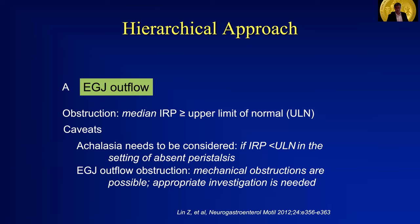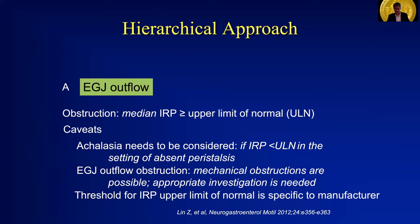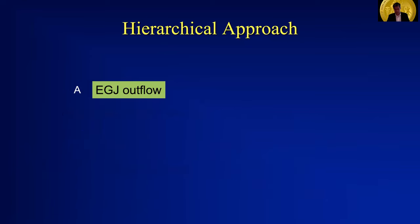I typically will recommend in the text of my report that a patient with EGJ outflow obstruction have their symptoms and manometric findings correlated with upper endoscopy or an upper GI barium swallow study. Remember that the upper limit of normal is dependent upon which manometric system you're using.